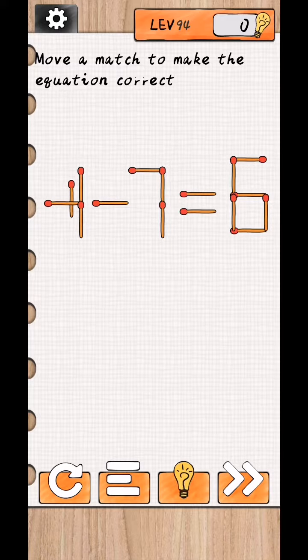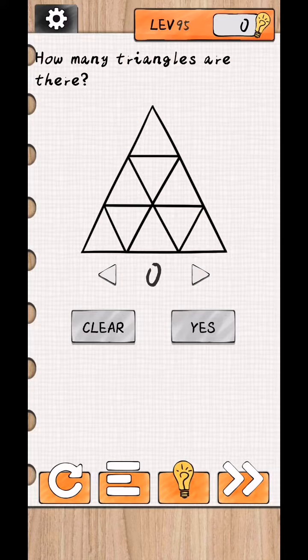Move this matchstick and level complete. Level 95: How many triangles are there? Two in bottom, and two, four, five, eight, nine, ten, and one is 11 and 12, 13.